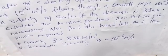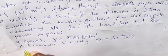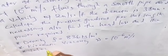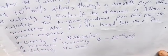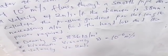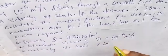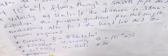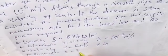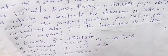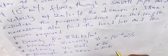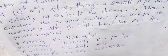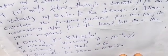The pipe flows at a velocity v of 2 meters per second. The diameter of the pipe is given as 38 millimeters, which we convert to meters by dividing by 1000, giving us 0.038 meters.